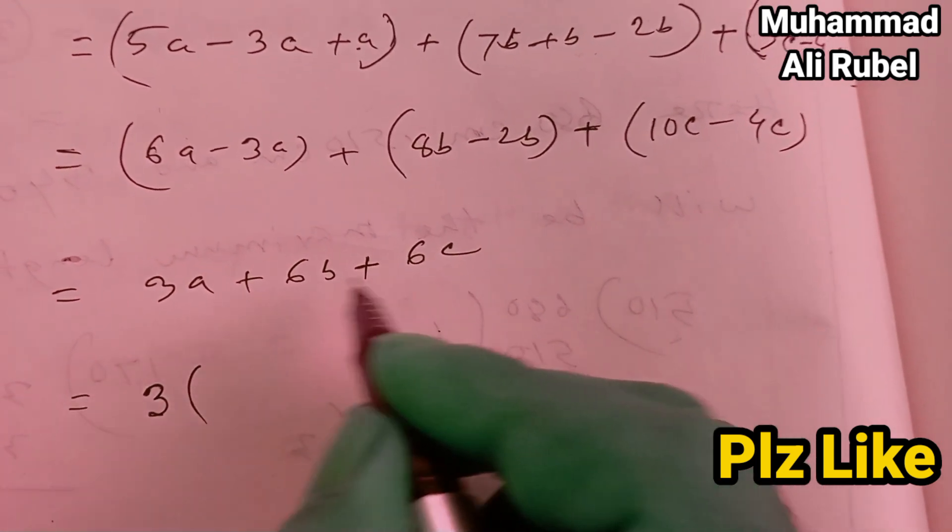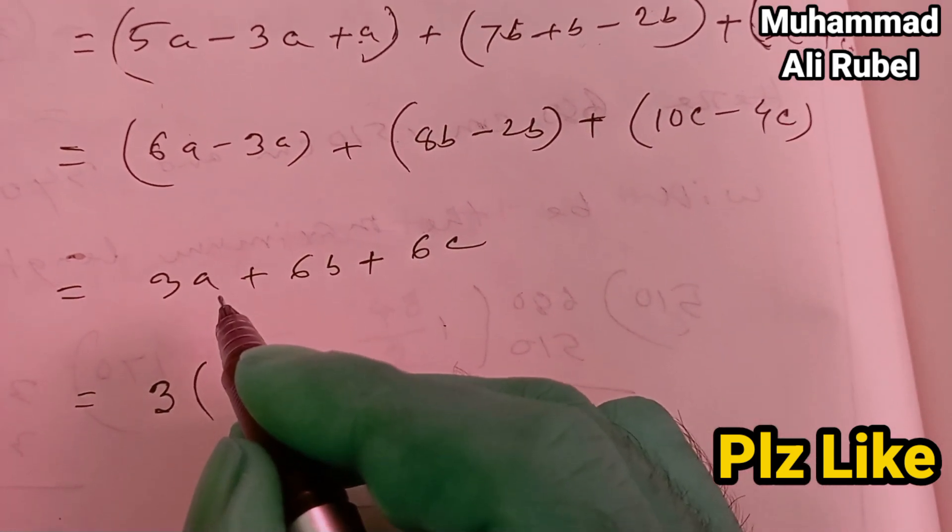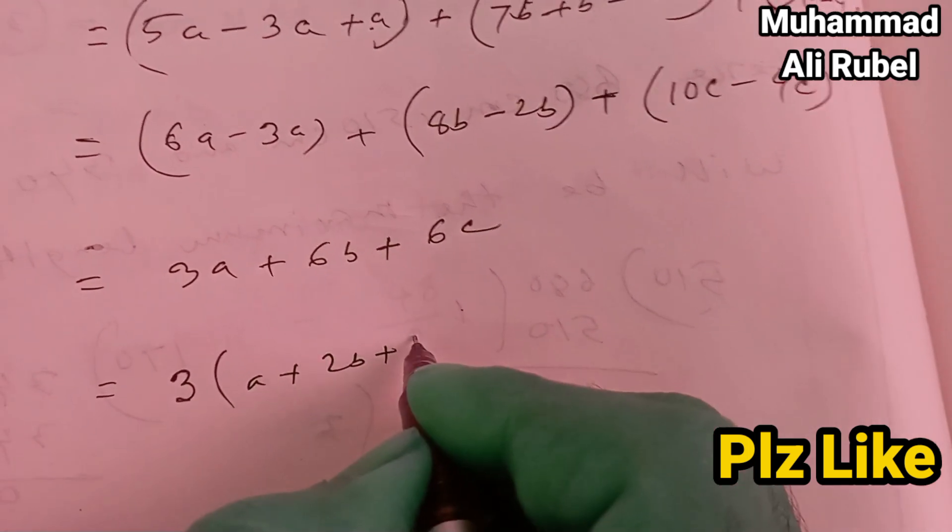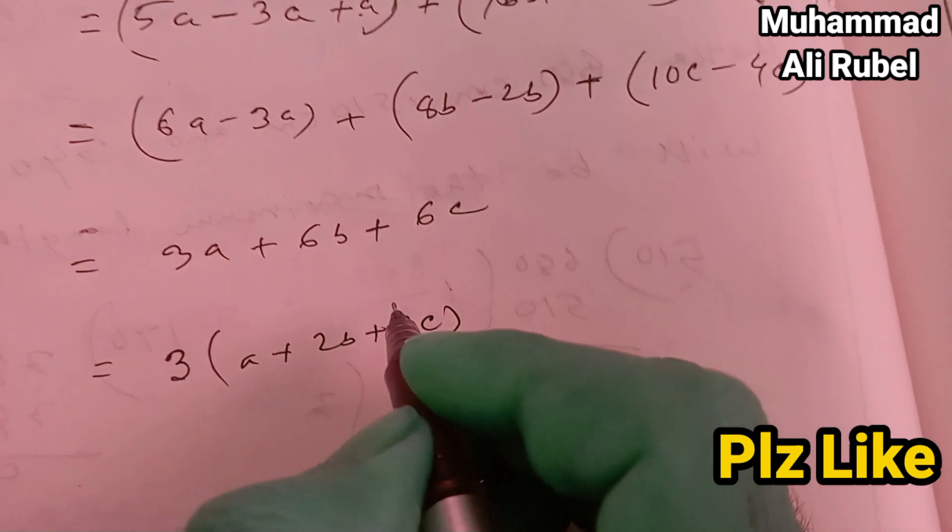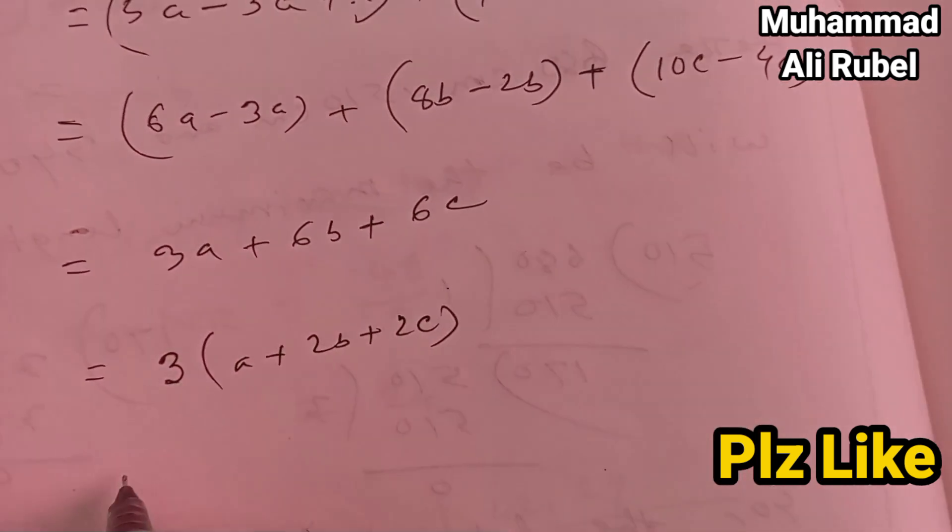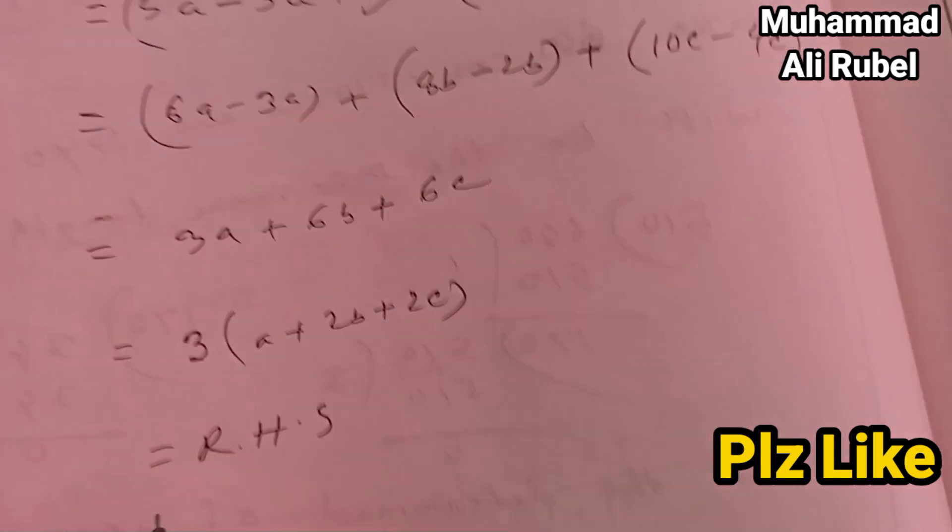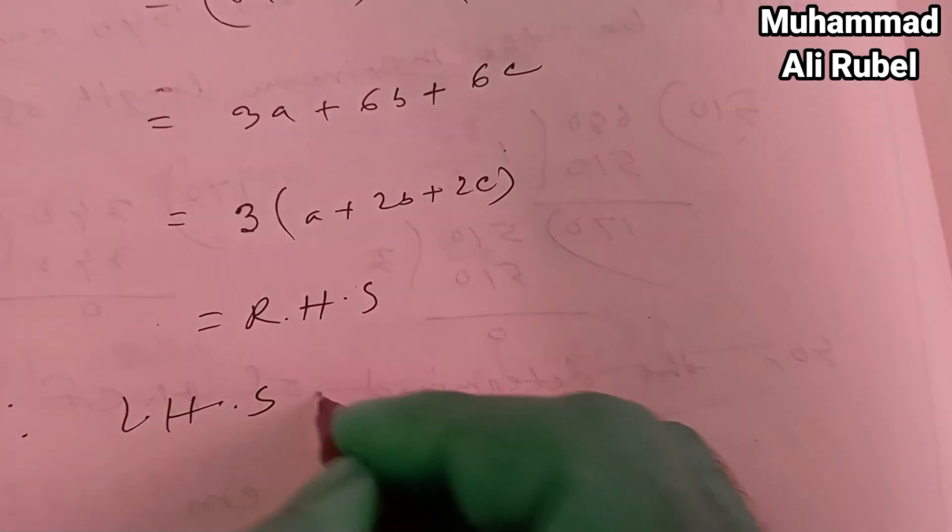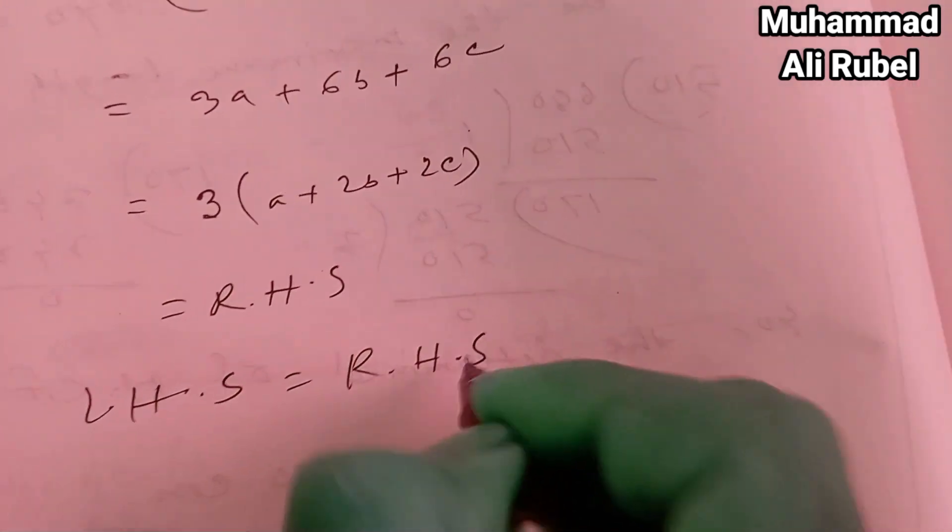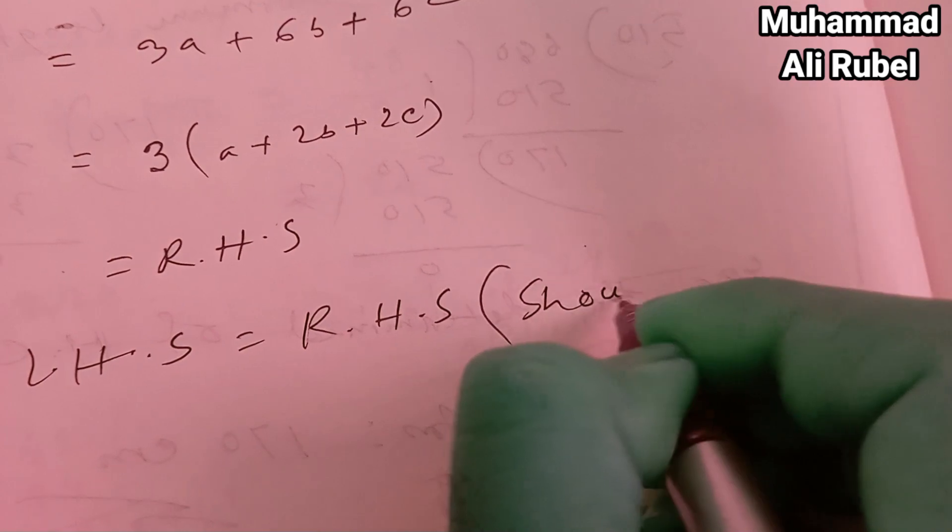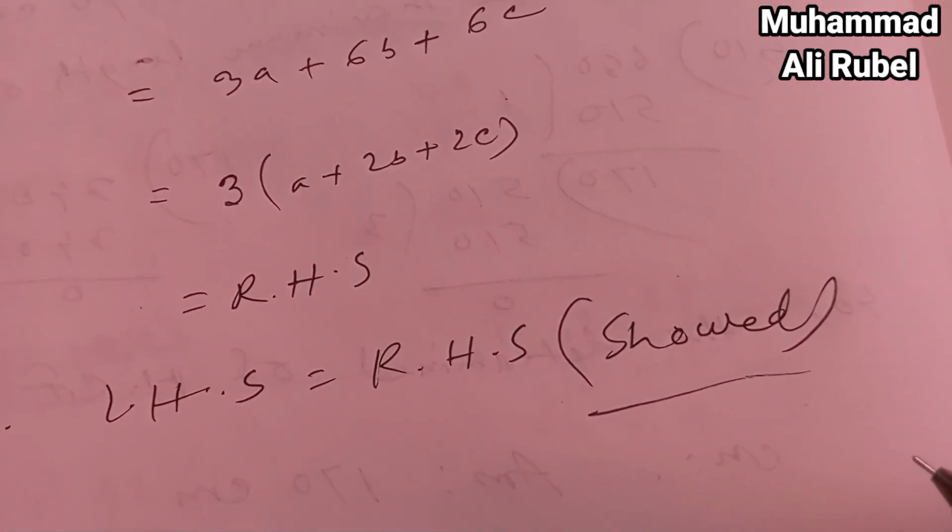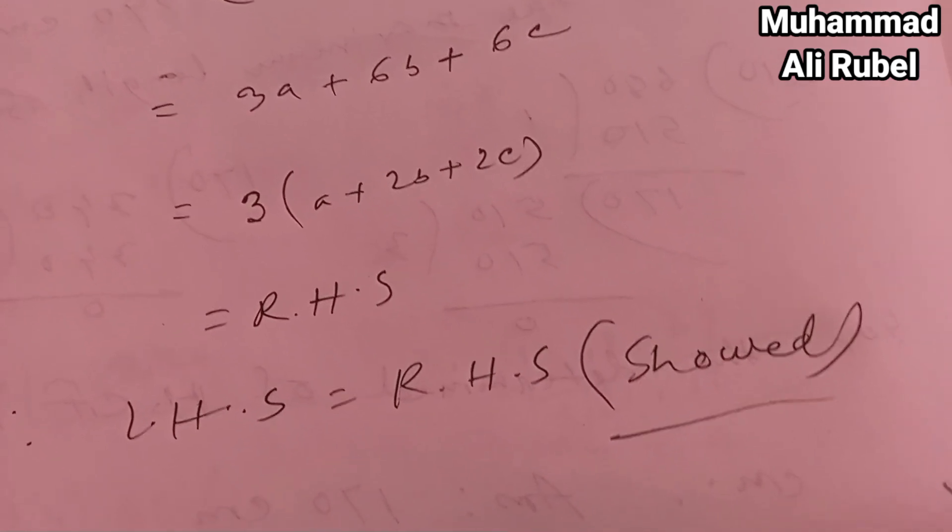Each has 3 in common, so 3 times a plus 2b plus 2c. That is the right answer. Left-hand side equals right-hand side, shown. If you guys like this video, please subscribe.